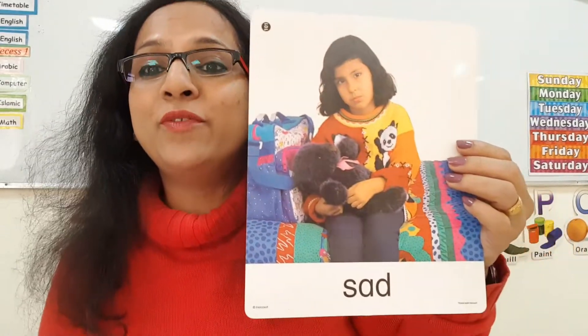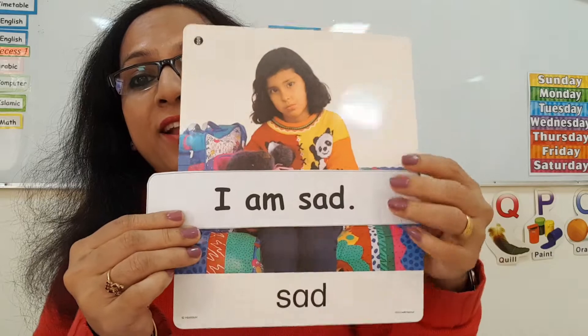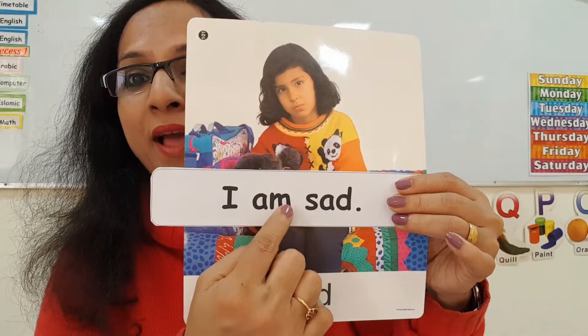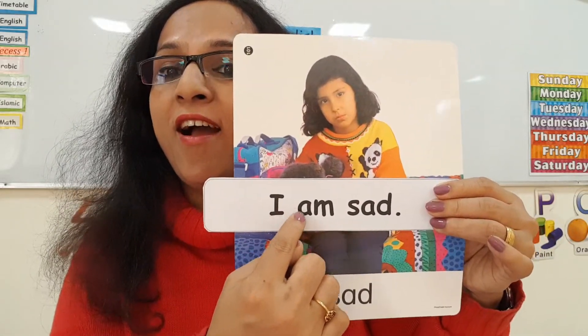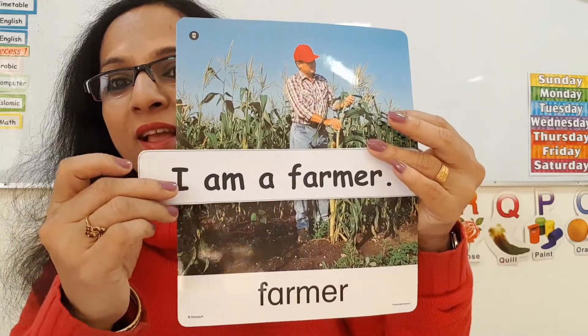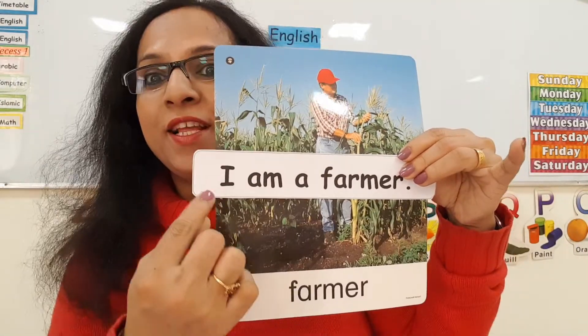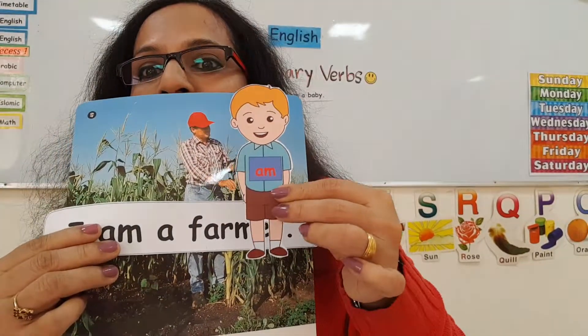AM will go with I. Look at this girl — she looks sad, so she will say, 'I am sad.' AM and I are best friends; AM has only one friend, that is I. Let's see one more picture: this is a farmer, and he will talk about himself: 'I am a farmer.' The elder brother AM always goes with I.